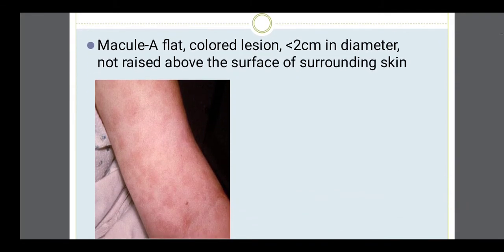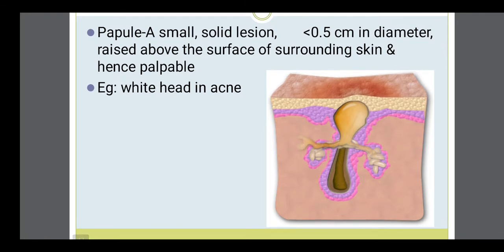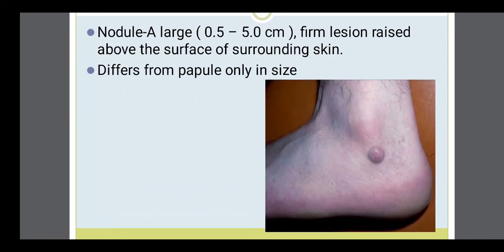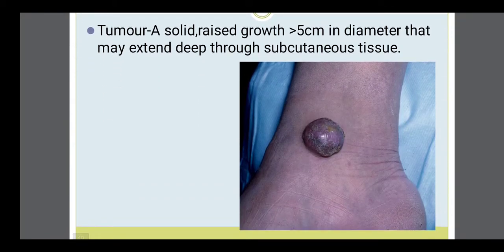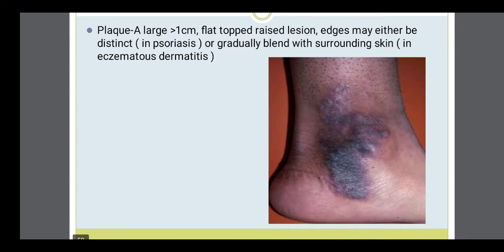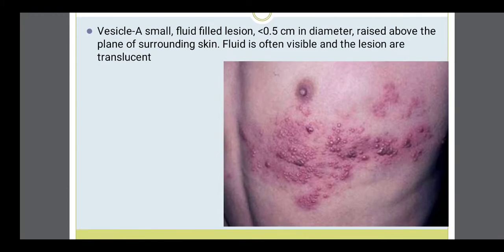These are some of the skin lesions. One is macule. Next is papule. Next is nodule. These are all given in any medical-surgical nursing books. Then skin tumors. Then plaque — dental plaque is also seen, and plaque on the skin is seen especially in chronic dermatitis, where by repeated itching the skin will look like this plaque. Then vesicles — vesicles are generally seen in some viral diseases like chickenpox and herpes.